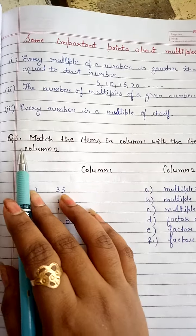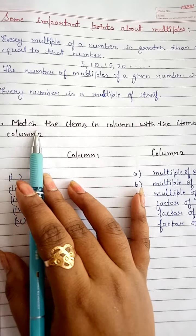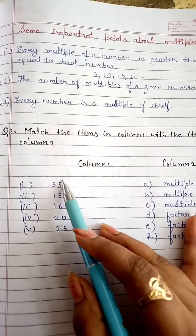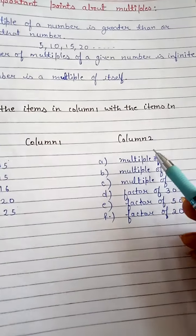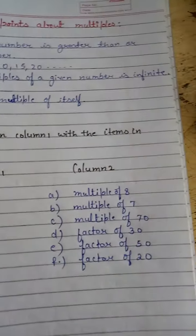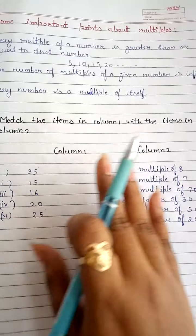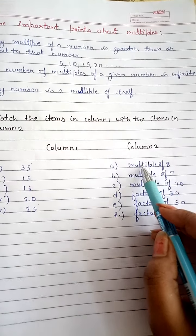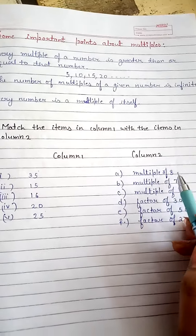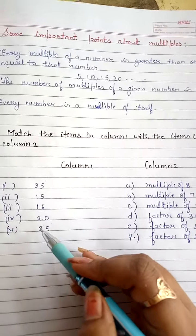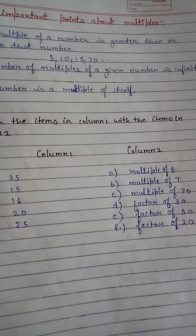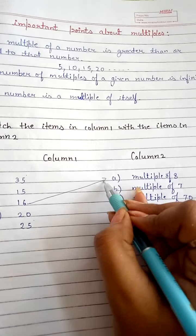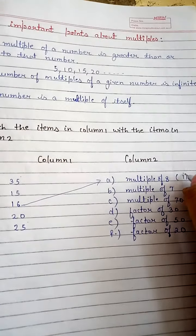Now let us discuss question number three: match the items in column one with the items in column two. Some numbers are given in column one and multiples and factors are written in column two. The first item is 'multiple of eight.' We know eight twos are sixteen, so the correct match is option three.